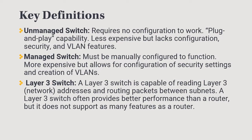A layer three switch is also called a multi-layer switch. Switches typically operate at layer two of the OSI model, so a layer three switch reaches into layer three — hence the name multi-layer switch. A layer three switch is capable of reading network addressing and routing packets between subnets. In smaller networks, we may implement a layer three switch instead of using a separate switch and router.